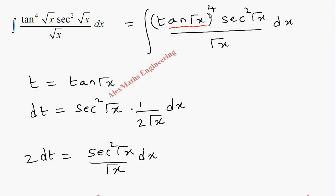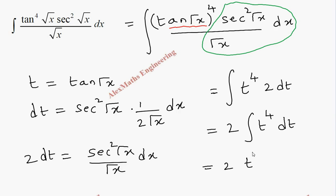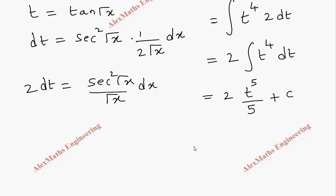We can replace this entire term as 2 dt, so the integral becomes t⁴ into 2 dt. Taking 2 outside the integration, we get 2 integral of t⁴ dt. By the integration formula, this is t⁵ by 5 plus c. Replacing t, the final answer is 2/5 into tan⁵(√x) plus c.